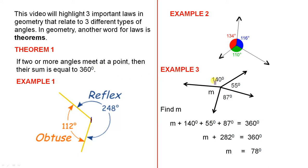For example 3, we have four angles here that meet at a point. One of them is unknown, and three of them are known. If we use this theorem, we can form this equation. So M plus the other three angles add up to 360 degrees. M plus 282 degrees equals 360 degrees, so M must be 78 degrees.